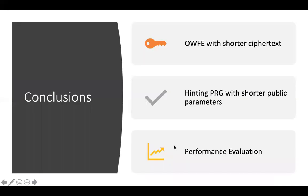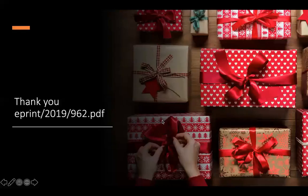Let me conclude the talk. We discussed one-way function with encryption and saw that previous papers use the missing block framework. We proposed a different framework that gives efficient ciphertext. We also extended the same techniques for hinting PRGs, leading to hinting PRGs with shorter public parameters. We evaluated our performance and believe the techniques can be extended to other related primitives as well. Thanks for listening.